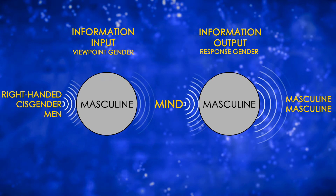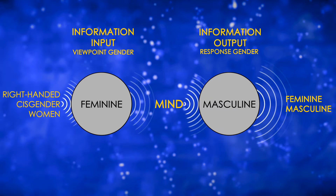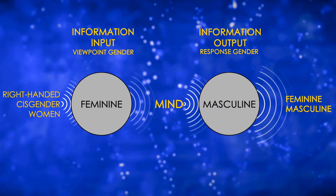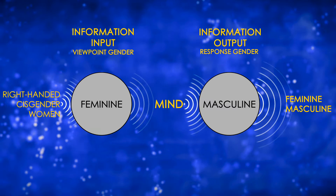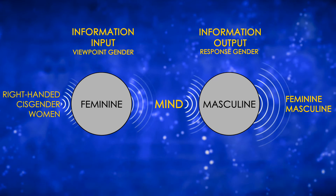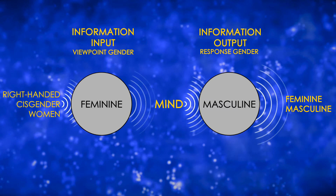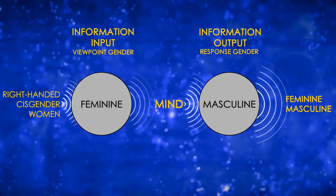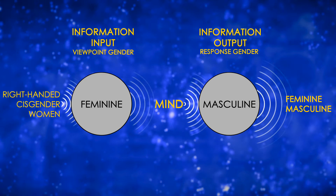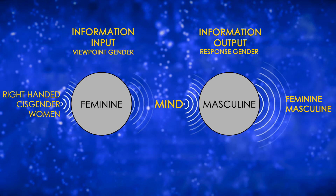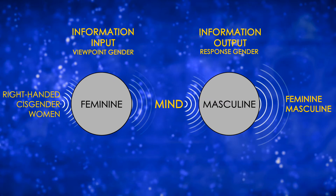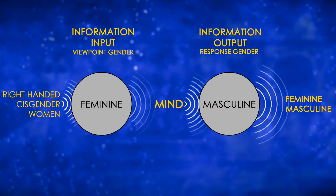If you are a right-handed woman or left-handed man, more than likely you default to use one gendered system to process input and another to process output. This gives you two different dominant genders. Consider, for example, right-handed cisgender women. Most default to a feminine big-picture view of the world that inspires them to serve others and be cooperative. However, their default response is masculine. We know this because each hemisphere of the brain controls the opposite side of the body. So right-hand dominance tells us that our masculine left hemisphere defaults to process our response. Since a majority of women are right-handed, it's not surprising that so many women are selfish, aggressive, competitive, and materialistic, like so many men.